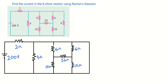Welcome to this lesson. In this video you are going to solve a question on screen. The question says you should find the current in the 8-ohm resistor using Norton's theorem. To apply Norton's theorem, we will have to take out the 8-ohm resistor from the circuit, then find the current that will be flowing through that branch where the 8-ohm was connected.